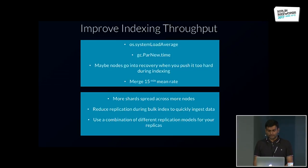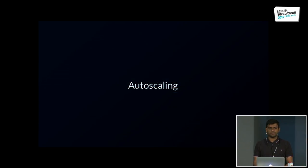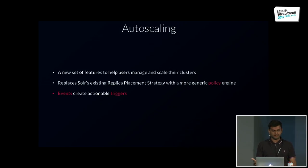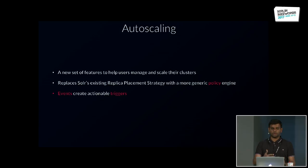Now that we've understood how to use metrics combined with APIs, what is Solr doing starting in Solr 7 to make this easier? The set of features we're calling auto-scaling will help you manage and design your cluster better. It replaces Solr's existing replica placement strategy with a more generic policy engine where you can write your own policies. With auto-scaling, there'll be concepts like events and triggers so you can act on events automatically.